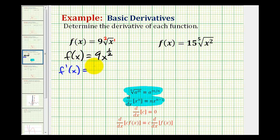So f prime of x will equal nine times the derivative of x to the one-half. For the derivative of x to the one-half, we're going to multiply by one-half. And then for the new exponent, we'll have one-half minus one.